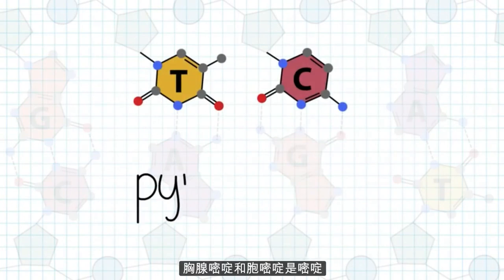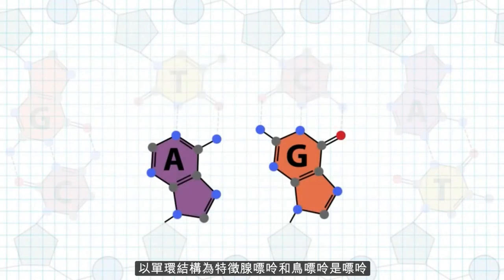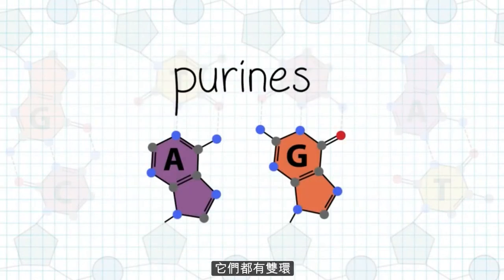Thymine and cytosine are called pyrimidines, characterized by their single ring structure, and adenine and guanine are called purines, which have double rings.